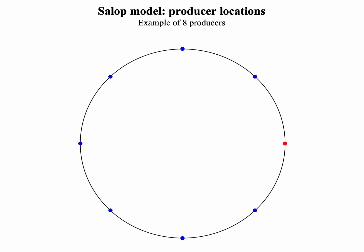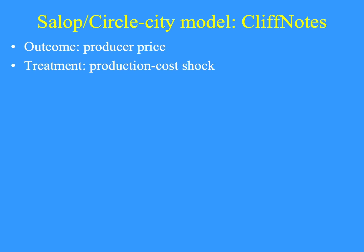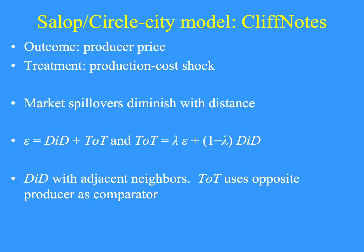Here we briefly point out what can be done when market spillovers diminish with distance. The model has producers evenly spaced around a circle — here we have eight, but it could be any number bigger than one. A targeted treatment is administered to one producer, colored in red. Market spillovers will be experienced by the others. The outcomes are the prices charged by the producers; the treatment is a production cost shock. The special result for the Salop model is that the scale effect is the sum of the DID and TOT. The scale effect is outside the range spanned by DID and TOT.